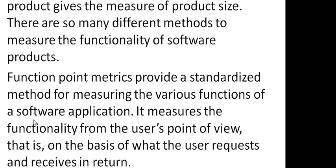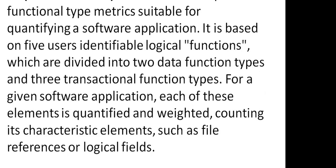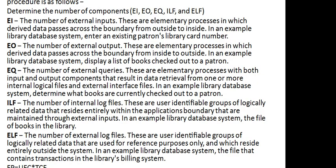The next size measurement is functionality. Functionality gives the measure of product size and there are various methods to measure it. The basic measurement of functionality is the function point, which provides a standard method for measuring the various functions of software applications from the user's point of view. The most widespread functional point method is the IFPUG measure, suitable for quantifying a software application. It is based on five user-identifiable logical functions divided into two data function types and three transactional function types. Each element is quantified and weighted by counting its characteristic elements. Albrecht's function point method is applied, considering five functional points from the user's point of view.